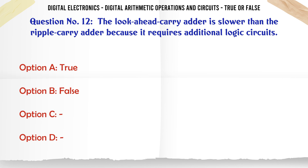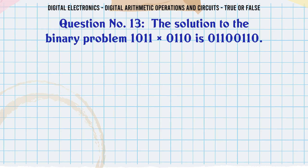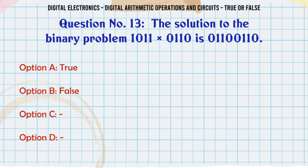The look-ahead carry adder is slower than the ripple carry adder because it requires additional logic circuits. True or False? The correct answer is False.